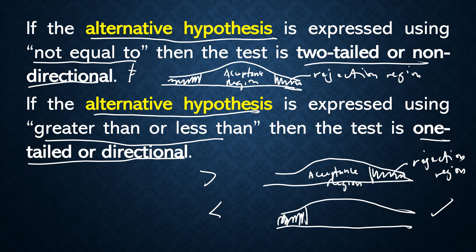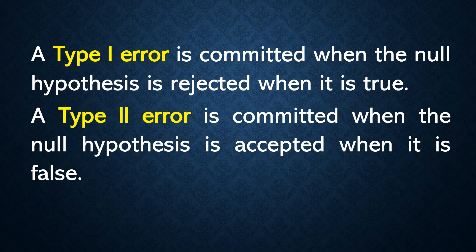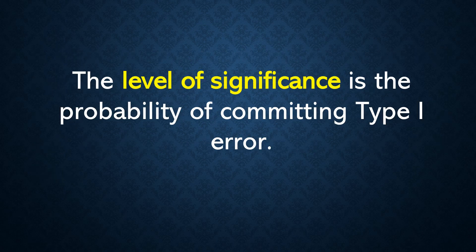Let's now discuss Type 1 and Type 2 errors. Type 1 error is committed when the null hypothesis is rejected when it is true. Type 2 error is committed when the null hypothesis is accepted when it is false. So: rejecting a true H₀ is Type 1 error, and accepting a false H₀ is Type 2 error.